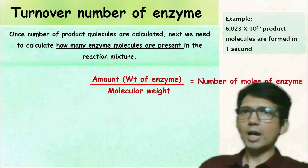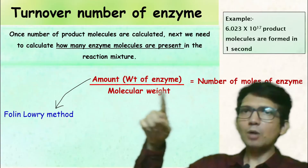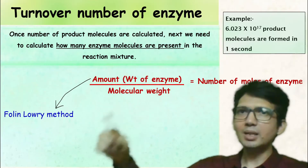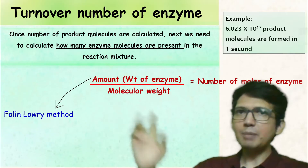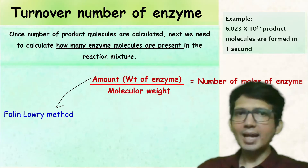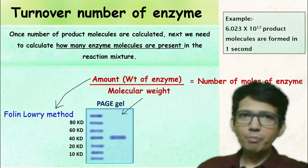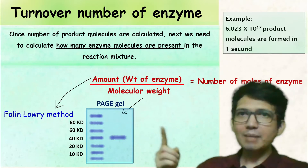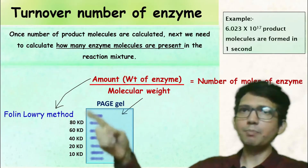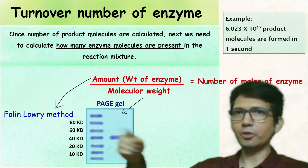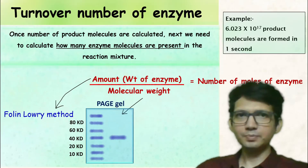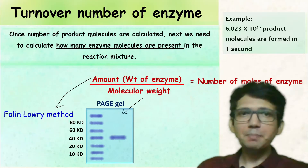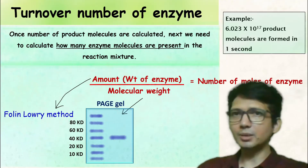The weight of enzyme can be obtained by performing Folin's assay, and the molecular weight can be obtained by performing polyacrylamide gel electrophoresis — either SDS-PAGE or native PAGE, depending on your enzyme sample.